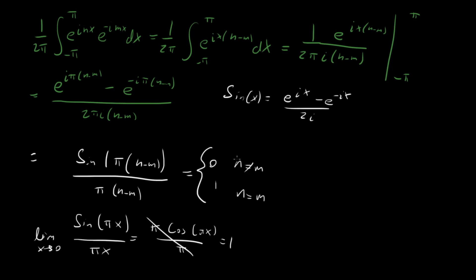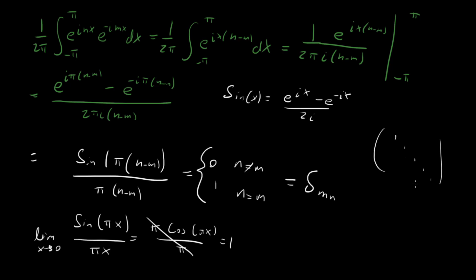So this integral equals one when n equals m and zero otherwise. One way to write that is as the Kronecker delta δ_mn, which is defined so that if n equals m you get one, and if m is not equal to n you get zero. You can think of it like an identity matrix — on the diagonal (where m equals n) you get one, otherwise zero. This result is actually very deep in Fourier analysis.